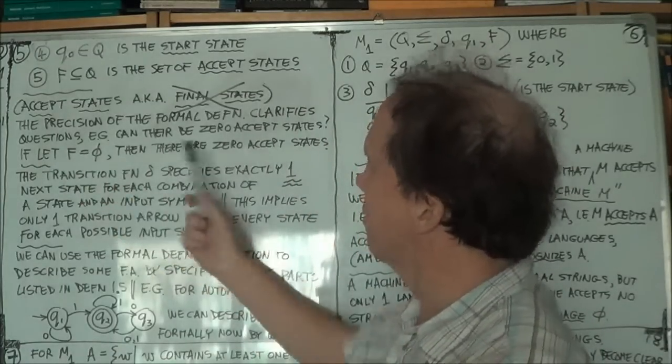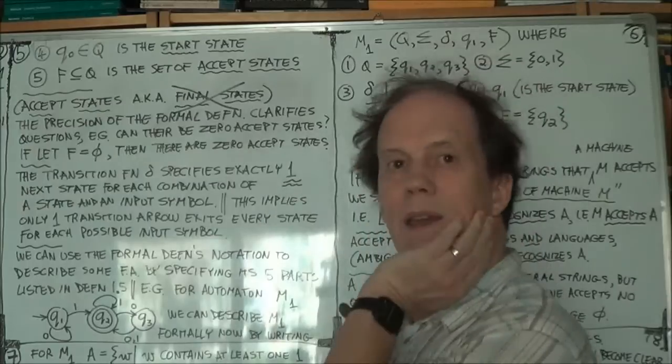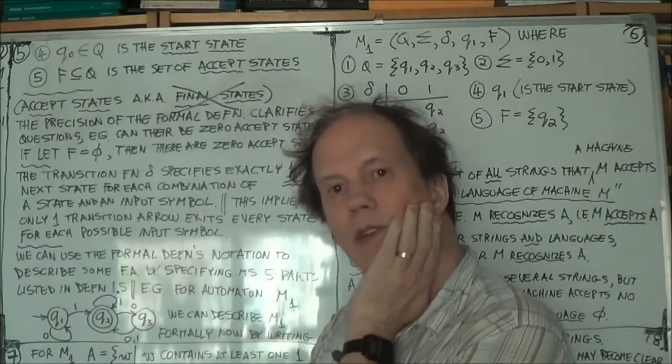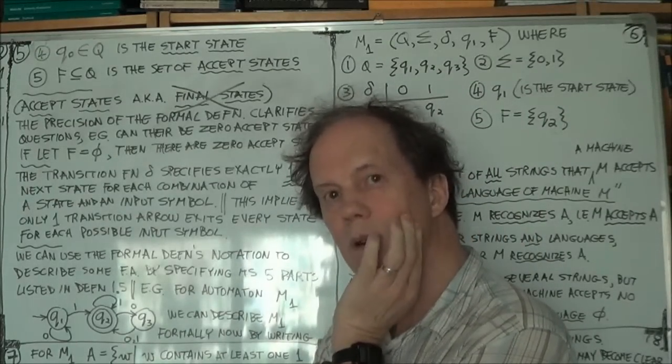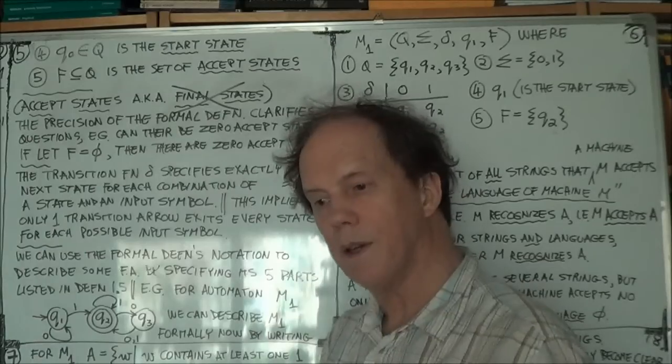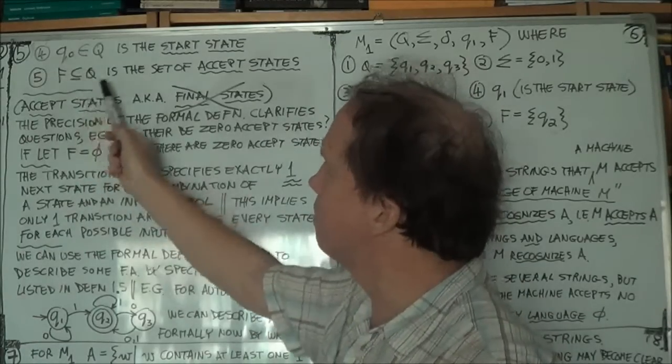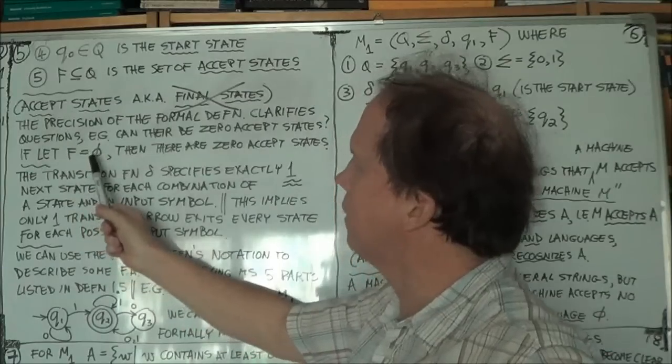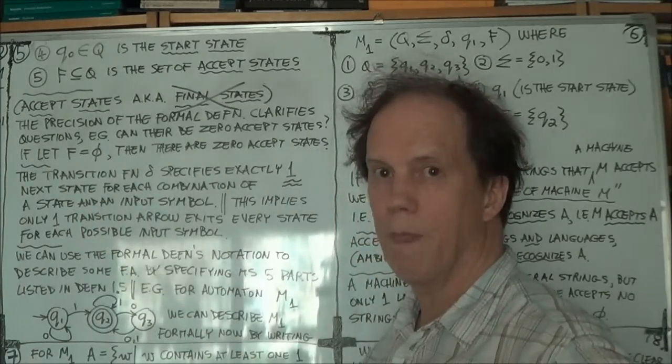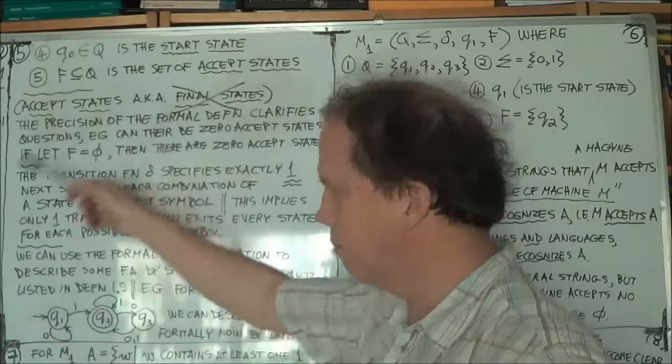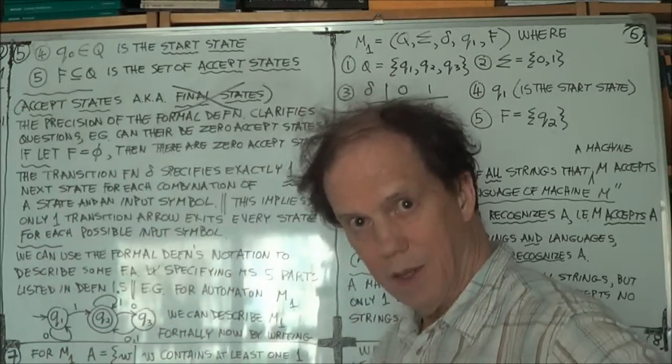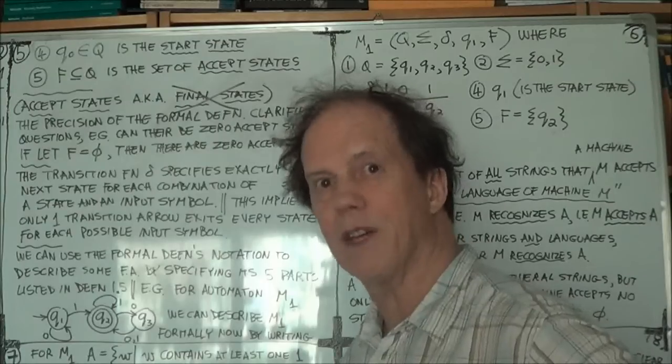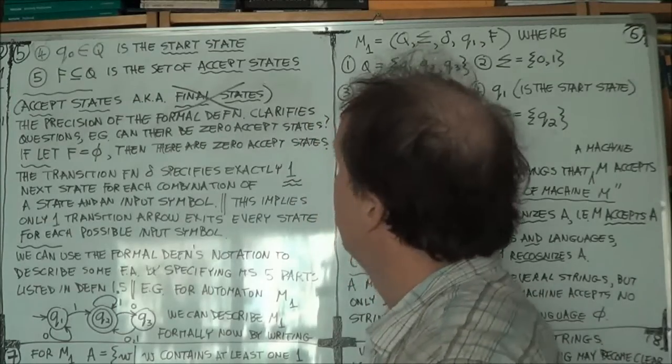So it answers that question. Yes, you can have an automaton with zero accept states. Because given the definition, we could make F the empty set. That's possible. So therefore, by the precision of the definition of your five-tuple, the formal definition.